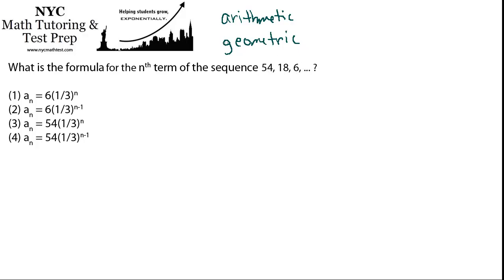The difference between an arithmetic and a geometric sequence is that with geometric, instead of having a common difference, you have a common ratio. Which means that the same number is being multiplied or divided as you go from one term to the next.